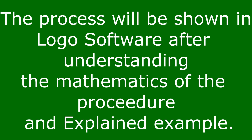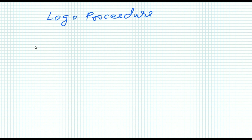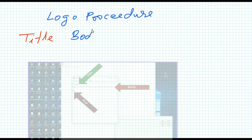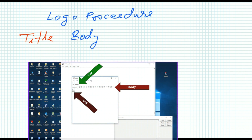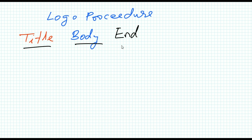In a procedure there are three parts. The first part is the title, the second part is the body, and the third part is the end.